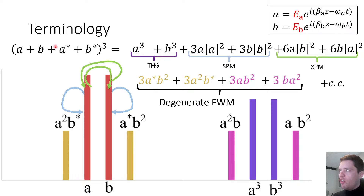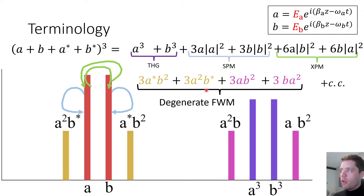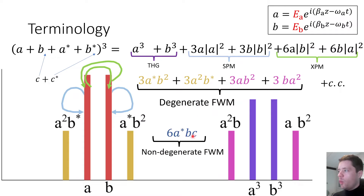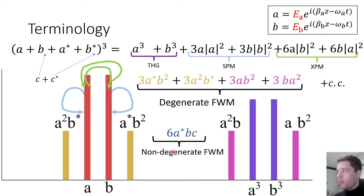With only two frequencies in the expansion, we always get degenerate four-wave mixing — every single term contains one of the frequencies twice, for example A²B or B²A. That's why we label it as degenerate. If we include a third frequency, we can also get terms where three different fields appear with none repeated, which is referred to as non-degenerate four-wave mixing.